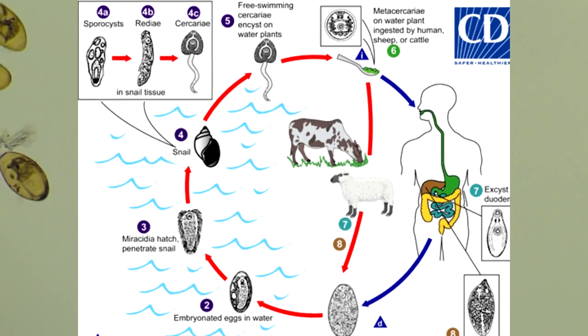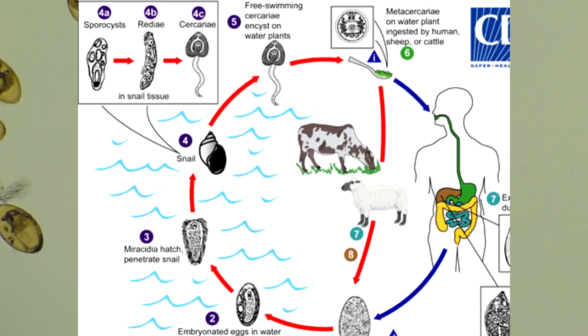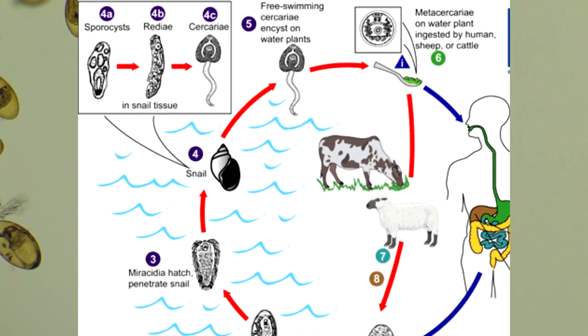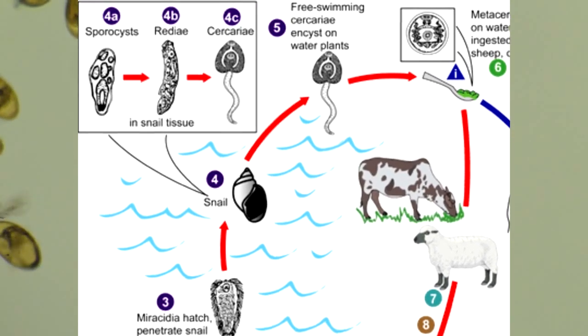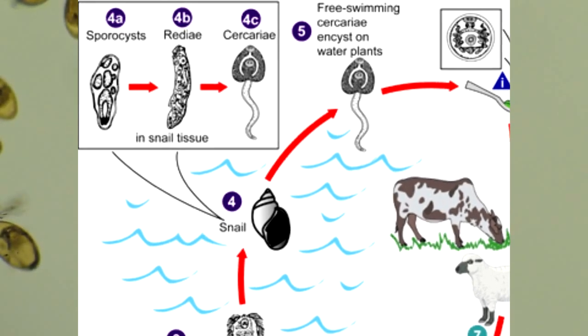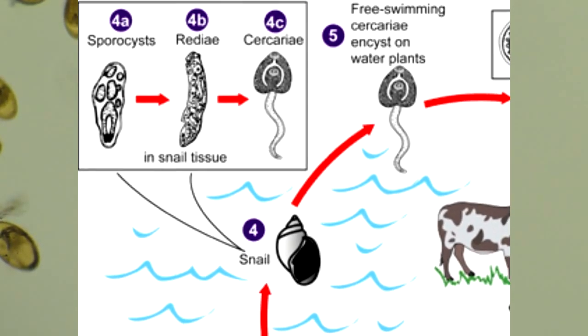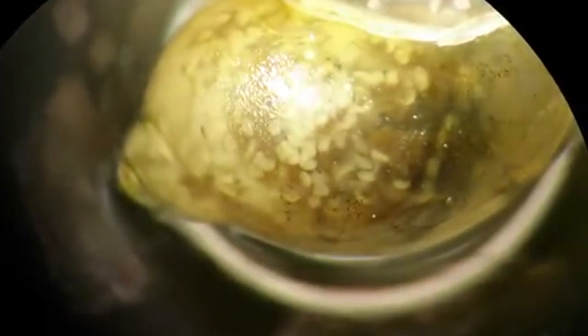The miracidia will burrow into the intermediate host's body cavity. Here they will form into a sac-like shape called a sporocyst, and as this sporocyst grows, new larvae will develop inside of it. These are called redia. These redia will burrow out of the sporocyst and move into the snail's digestive tract, where they'll feed and produce more larvae, which are called cercariae.